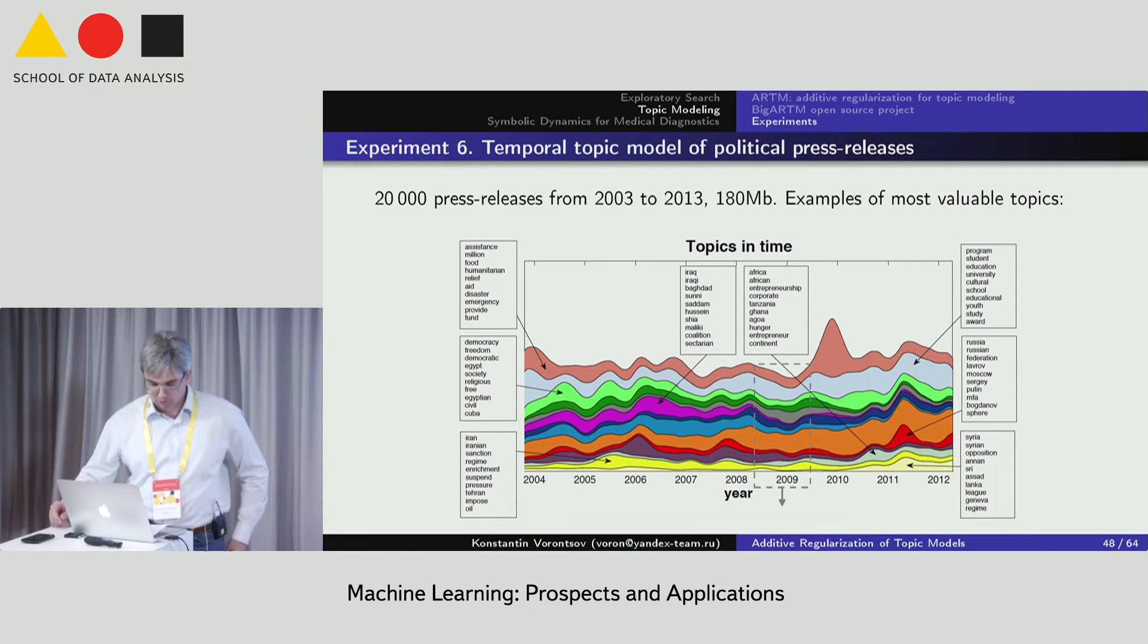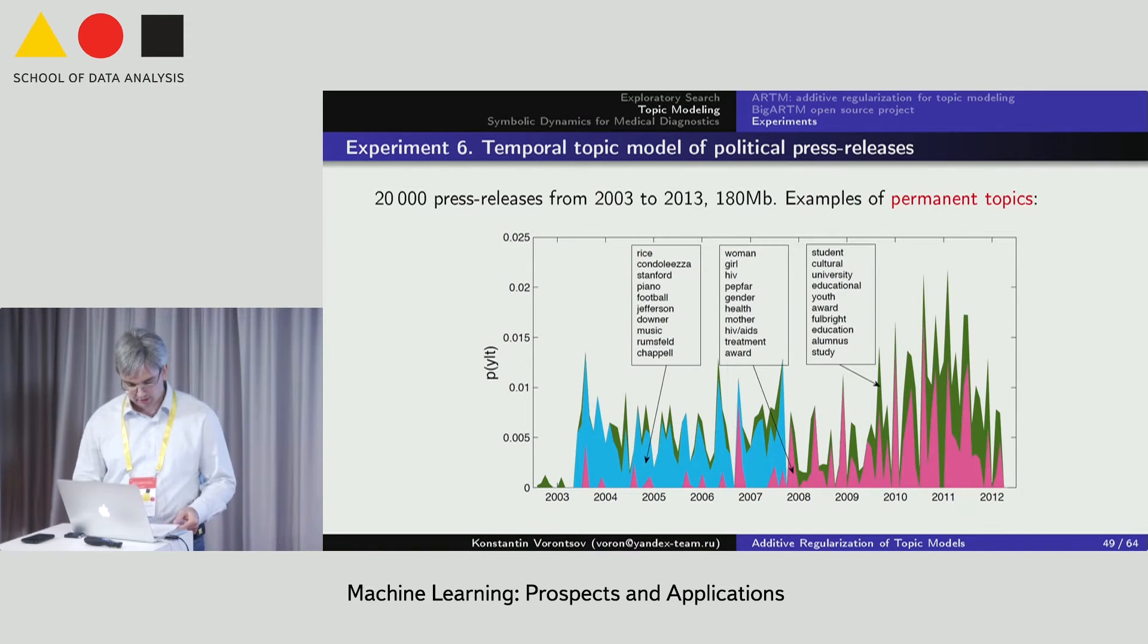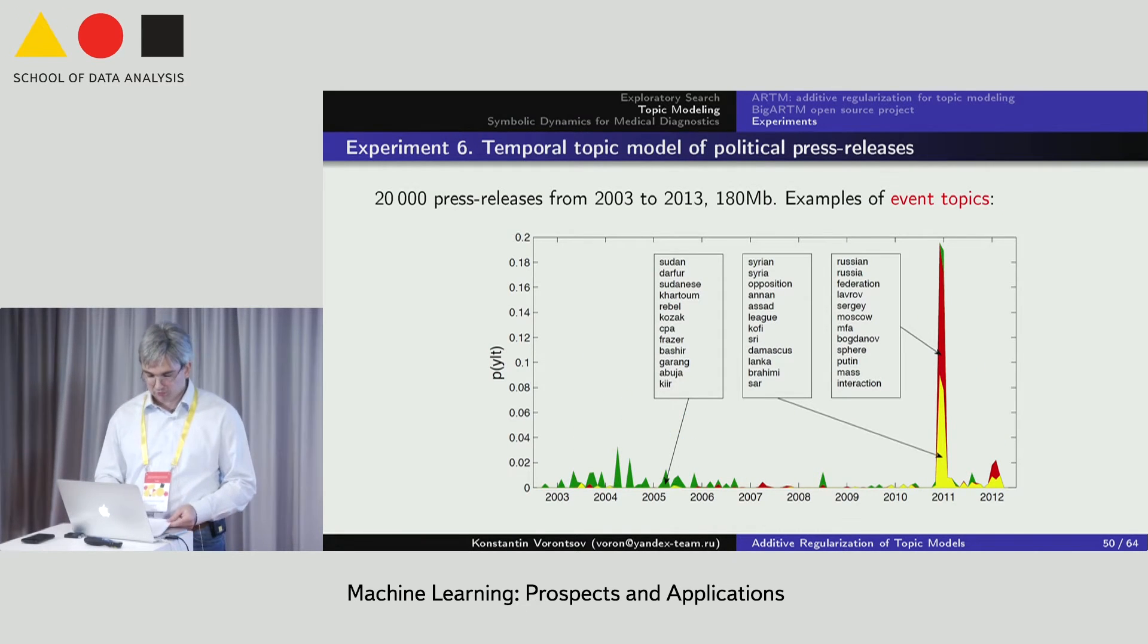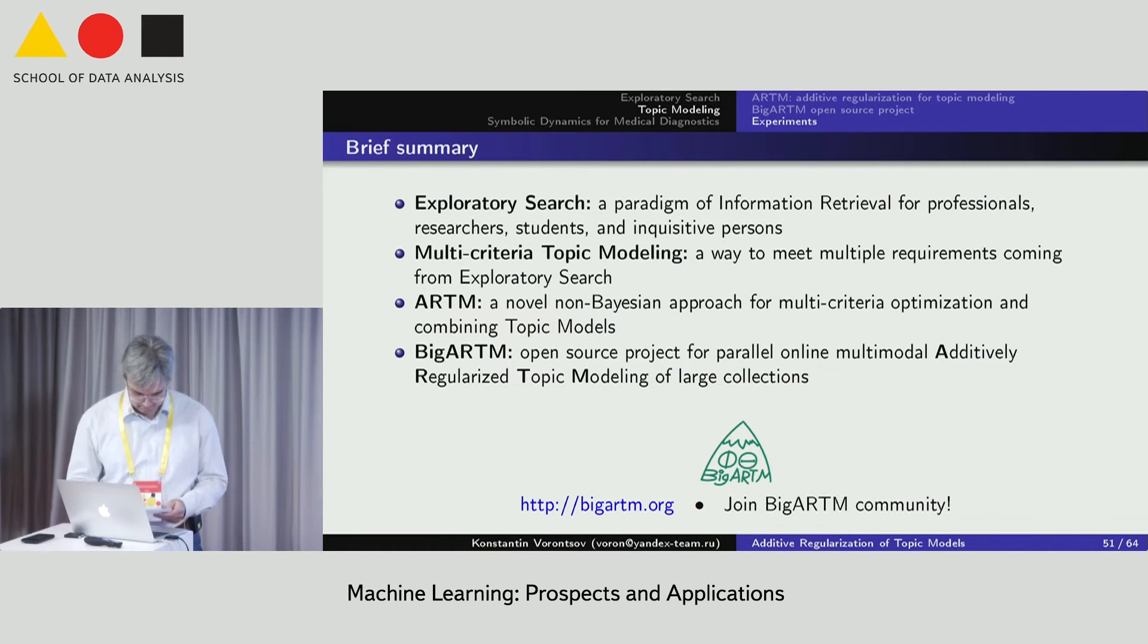We built a topic model for political press releases in English covering a 10-year period. The purpose was to find event topics, persistent topics, and to mine topic correlations. Here, there are examples of persistent topics about health care and education. This is an example of two event topics about Russia and about Syria that the model determined is highly correlated at some moment, four years ago, not now.